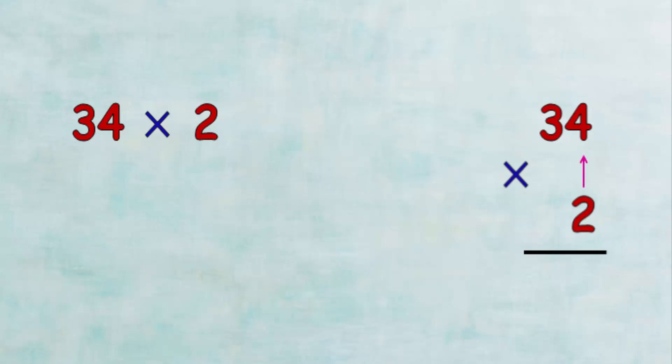And multiplying 2 by 3, which equals 6. Therefore the product of 34 by 2 is 68.